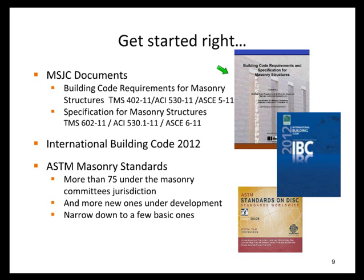The MSJC documents — that stands for Masonry Standards Joint Committee — include the Building Code Requirements for Masonry Structures, which you may have heard called ACI 530. Currently, TMS is the lead sponsor, so it's more correctly called TMS 402. There's a companion specification, previously known as ACI 530.1, now called TMS 602. This document is referenced in the IBC 2012. Within both of those documents, a lot of ASTM standards are referenced. This may not be new for most of you, but I want to make sure we're all starting on the correct page.